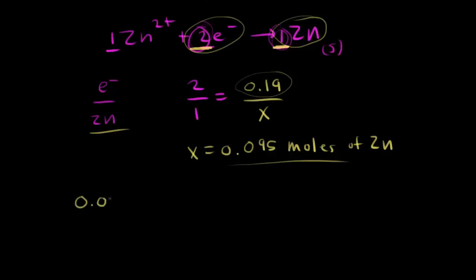If you have 0.095 moles of zinc, and we multiply by the molar mass of zinc, which is 65.39, so the molar mass of zinc is 65.39 grams per mole. If you multiply, the moles cancel out, and that gives you grams.